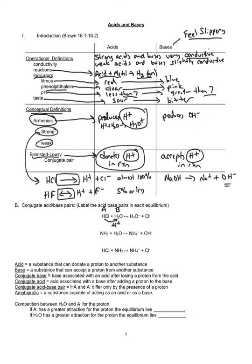After the acid donates the proton, it becomes what's called a conjugate base — it now forms a particle with more basic properties. The base, by accepting the proton, now forms a conjugate acid. So on the product side, we form another acid and base. HCl, by donating the proton, becomes the conjugate base (CB), and H₂O becomes the conjugate acid — the hydronium ion H₃O⁺.